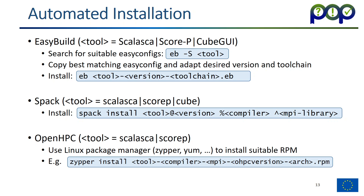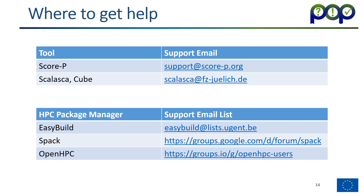OpenHPC provides ready-to-use RPMs to install. You go to the website, download the matching Scalasca RPM, and then use sudo or yum to install that RPM on your system.